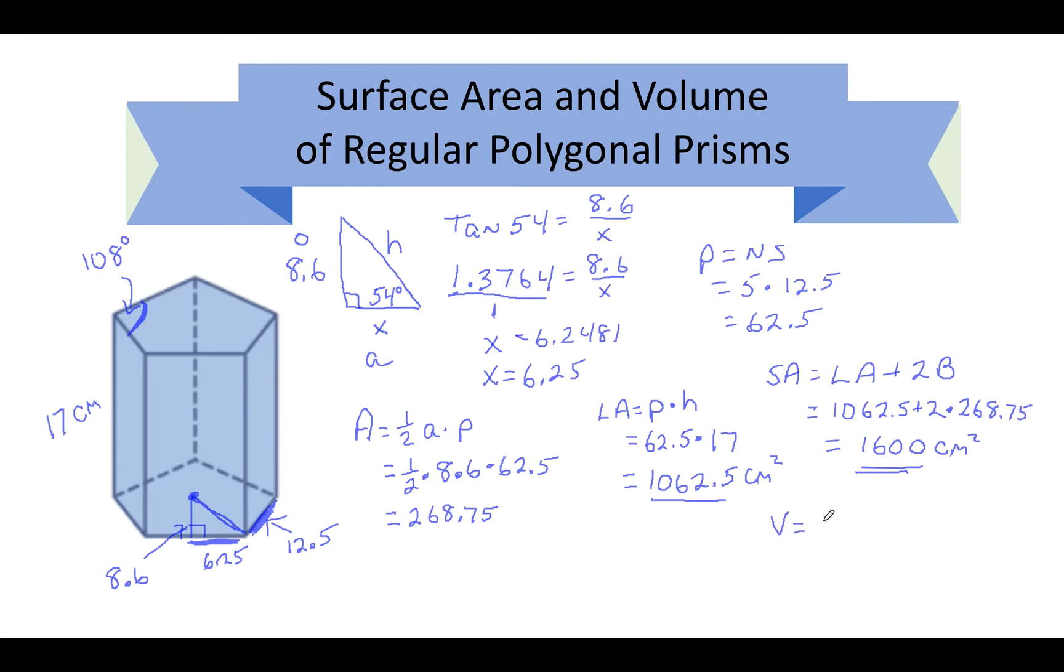Now let's find the volume. Volume of this would be area of the base times the height. Capital B stands for area of the base. Area of the base, 268.75 times the height of the prism. What was the height of our prism? 17, which is 4568.75 centimeters to the third power. I hope you found this video informative and helpful, and I will see you on the next video.